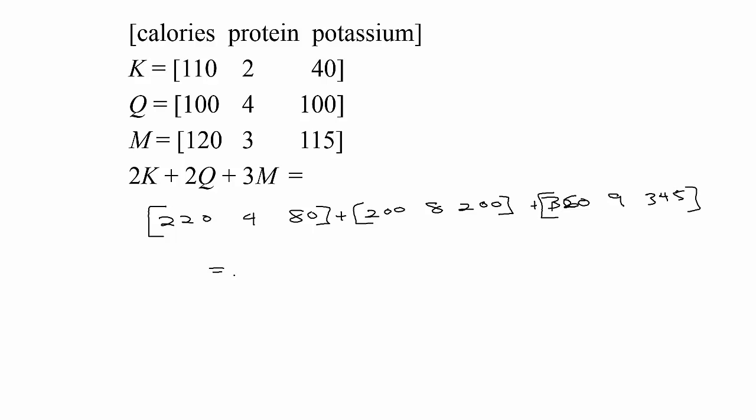If we add all those up by adding the corresponding entries, we can see the total number of calories: 220 plus 200 would be 420, plus 360 makes 780 total calories. 4 plus 8 would be 12, plus another 9 would make 21 grams of protein. 80 plus 200 would be 280, and if we add that to 345, we get 625.